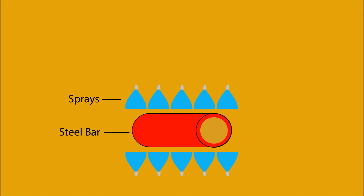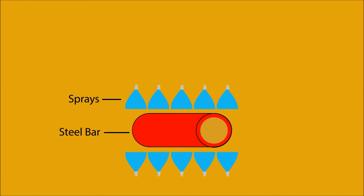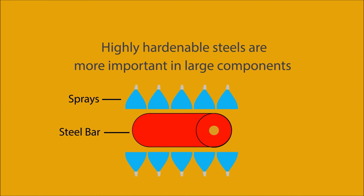Hardenability. In metallurgy, the hardenability of a steel is a key parameter. When we talk about hardenability in steels, we are often describing how deep into the steel we can achieve hardening. If a steel has low hardenability, it will produce a shallower depth of hardness. When a steel has high hardenability, it will be the same hardness throughout the thickness of the product. Highly hardenable steels are more important in large components.